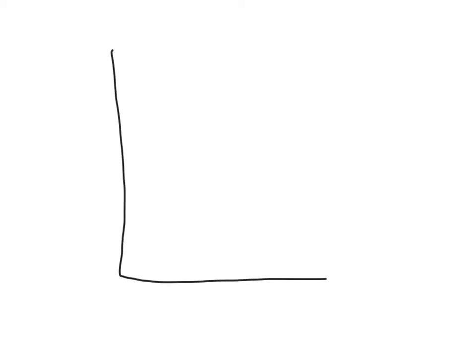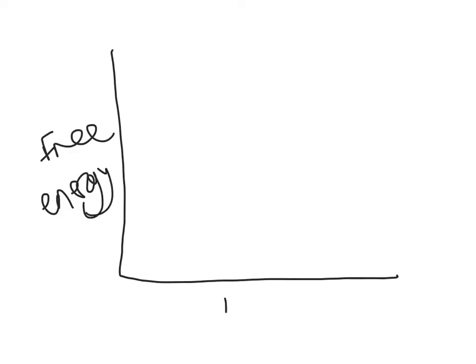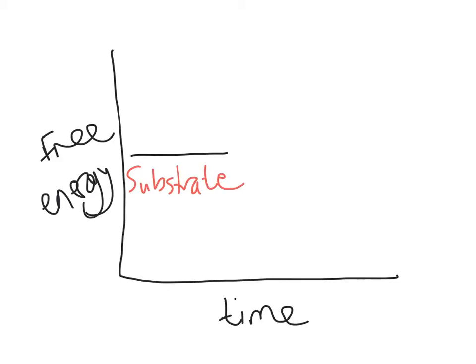As you should already know, enzymes are biological catalysts, and they work by lowering the activation energy for a reaction. I'm going to go over what I mean by activation energy. As you can see from the graph, the energy of the products needs to be less than the energy of the substrates, otherwise the reaction would not go ahead — in chemistry, we say it would not be energetically viable.